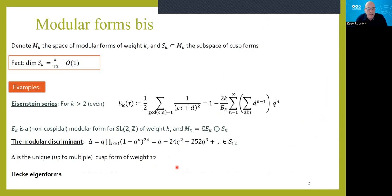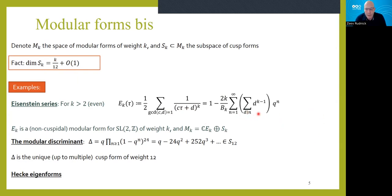Modular forms have a topological origin and the dimension of the space M(k) grows linearly with k — like k/12 plus a bounded quantity. Classical examples are Eisenstein series: you take something and periodicize it, and by definition it's a modular form of weight k. The Fourier expansion of the Eisenstein series is of arithmetic origin — coefficients are essentially divisor sums. This is a non-cuspidal modular form, and the space of modular forms decomposes as multiples of the Eisenstein series plus cusp forms.